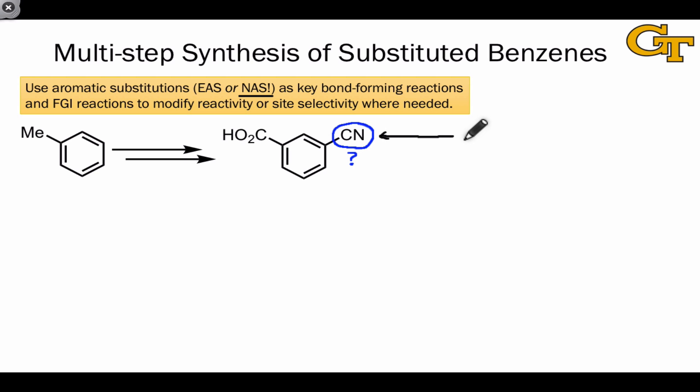One way to do this involves the substitution of the diazonium group and the involvement of an aryl diazonium synthetic intermediate. Treatment of the aryl diazonium with copper one cyanide, CuCN, gives us the cyano product. Working backwards then, we know that we can make the target from a synthetic intermediate containing the diazonium group. And for the time being, we've left the question alone of how we got the carboxylic acid.